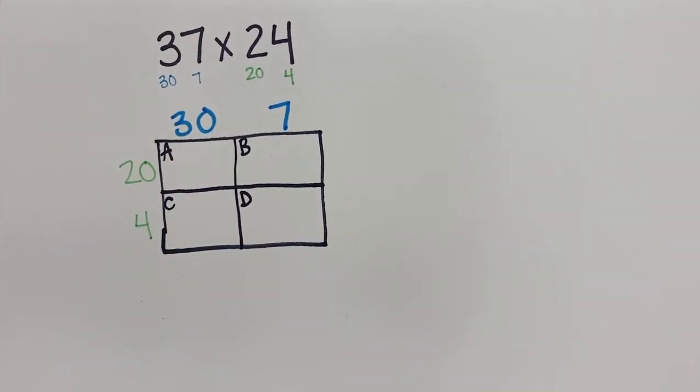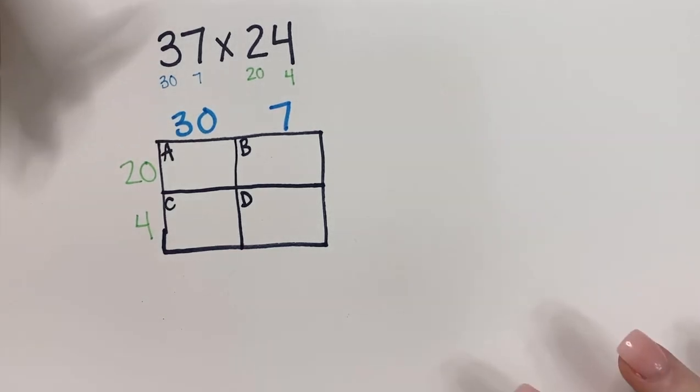We're still going to multiply these numbers, but we're going to multiply them more distributive, very similar to the distributive property in third grade. So we're going to distribute the numbers.